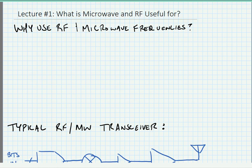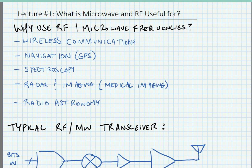What are the reasons that we use microwave and RF frequencies, or what are the things that we do with them? One of the first things we can think of is wireless communications. A few others are navigation by GPS, spectroscopy, radar and imaging, or radio astronomy. These aren't the only uses for RF and microwave frequencies, but they are some of the most common.